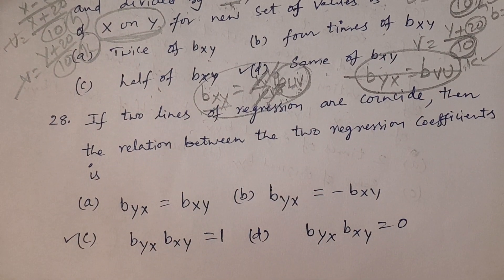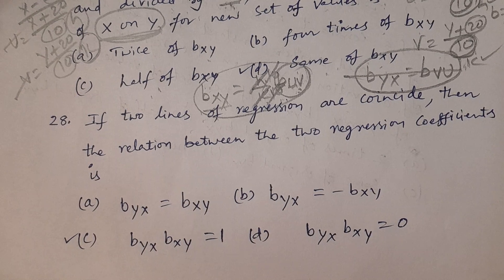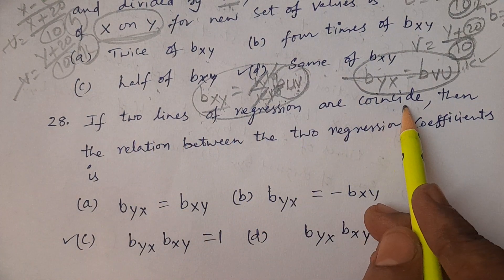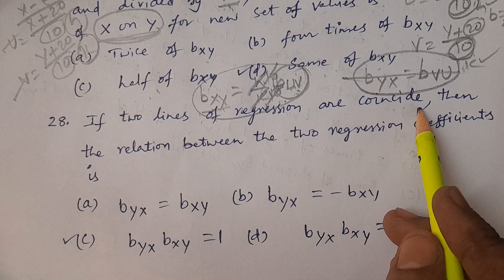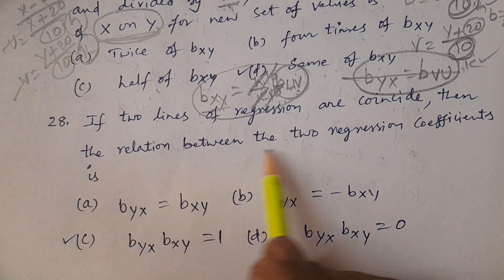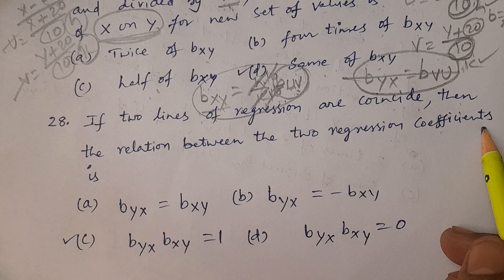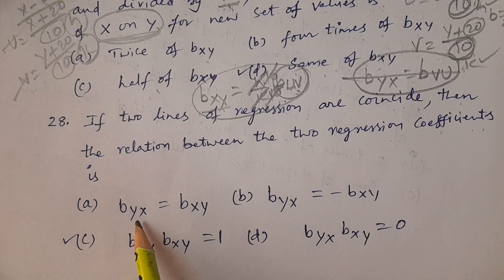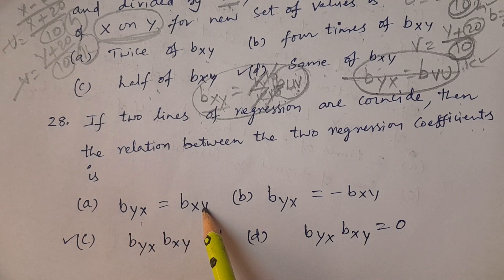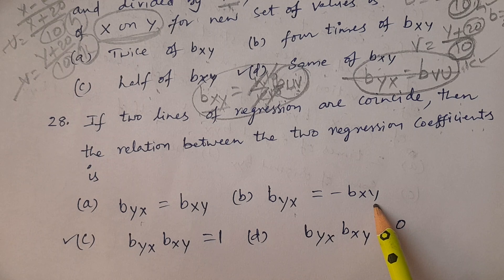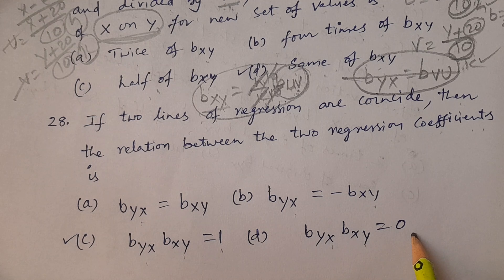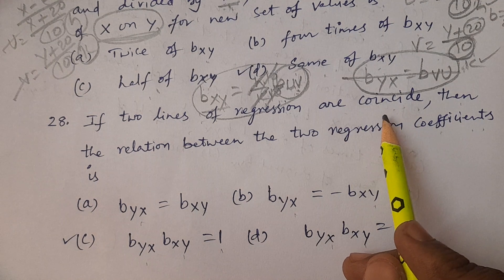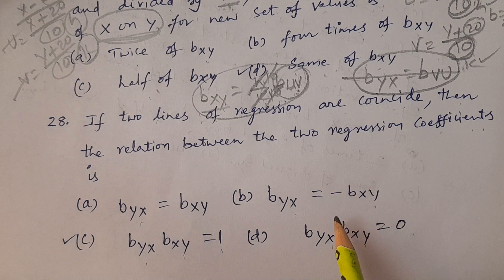Next, question number 28. If two lines of regression are coincident — if two lines of regression coincide — then what is the relation between the two regression coefficients? Now you see the options: A — byx equals bxy; B — byx equals minus bxy; C — byx into bxy equals 1; D — byx into bxy equals 0.